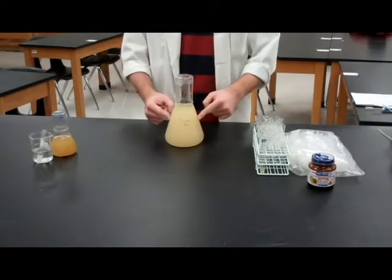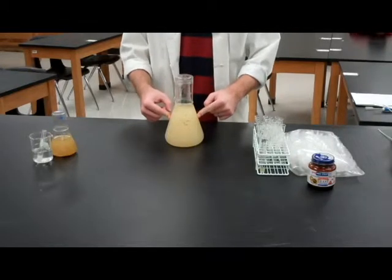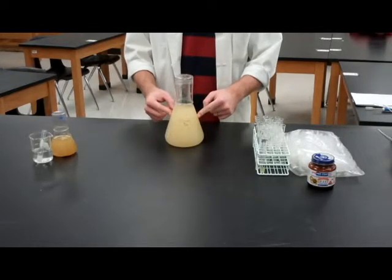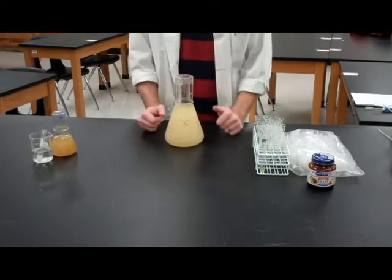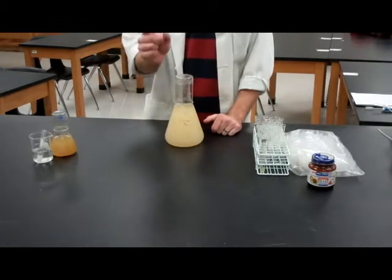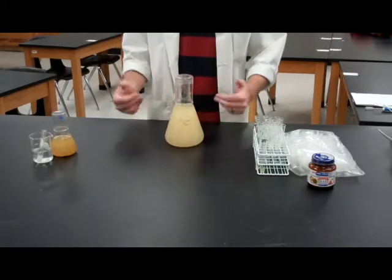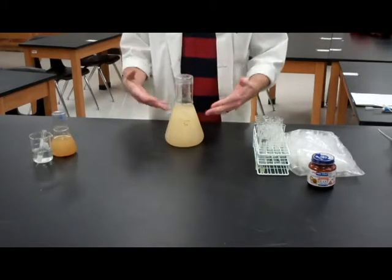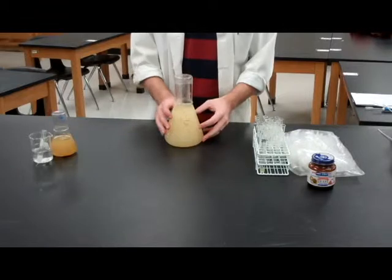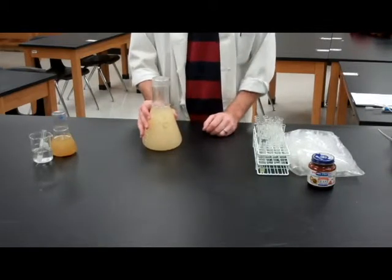You make YPD broth by adding 10 grams of yeast extract, 20 grams of peptone like casein hydrolyzed, you need short amino acid chains as their nitrogen source, and 20 grams of sugar like dextrose or glucose. Add all that into one liter of water and mix, and you have YPD broth.